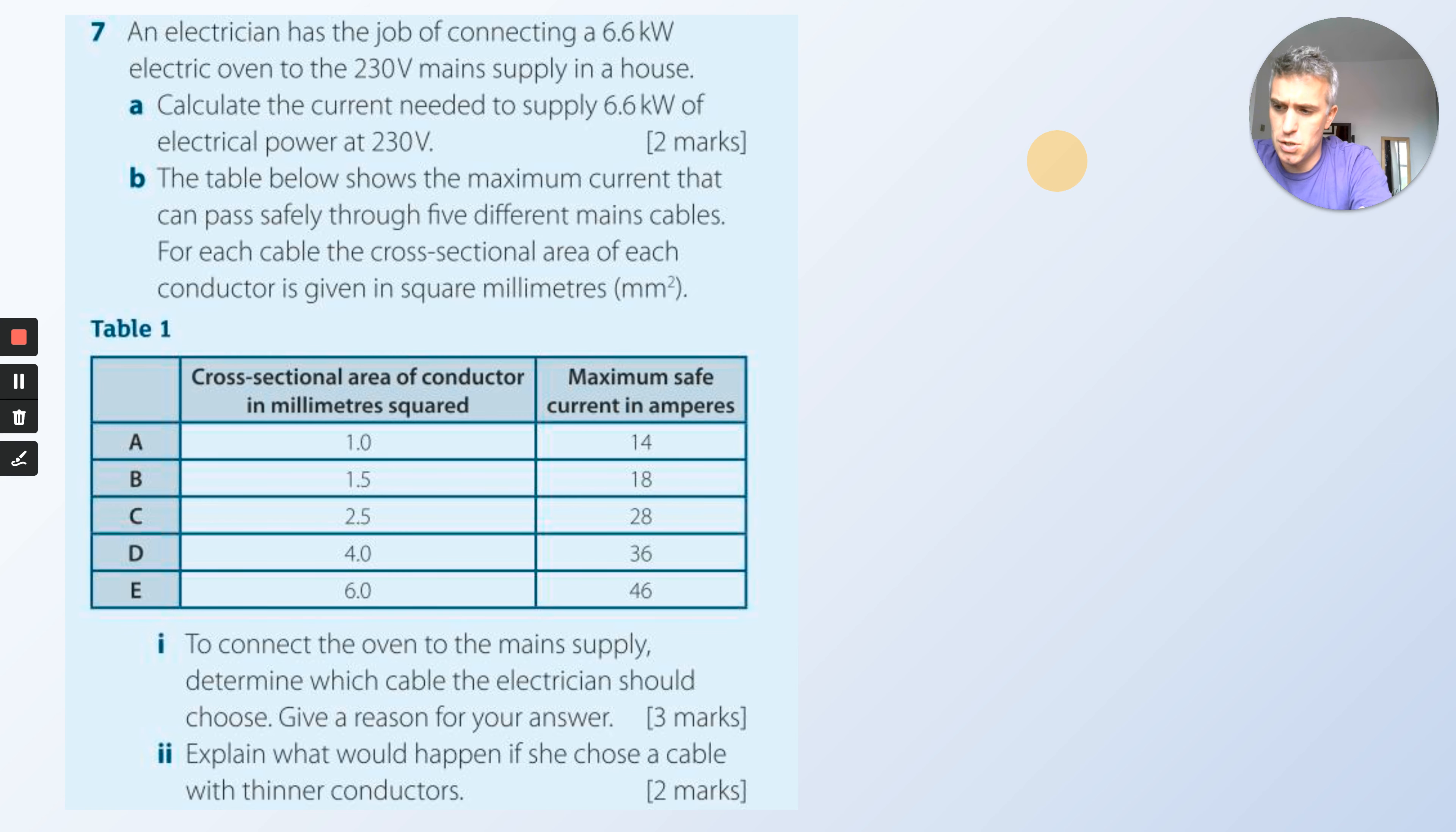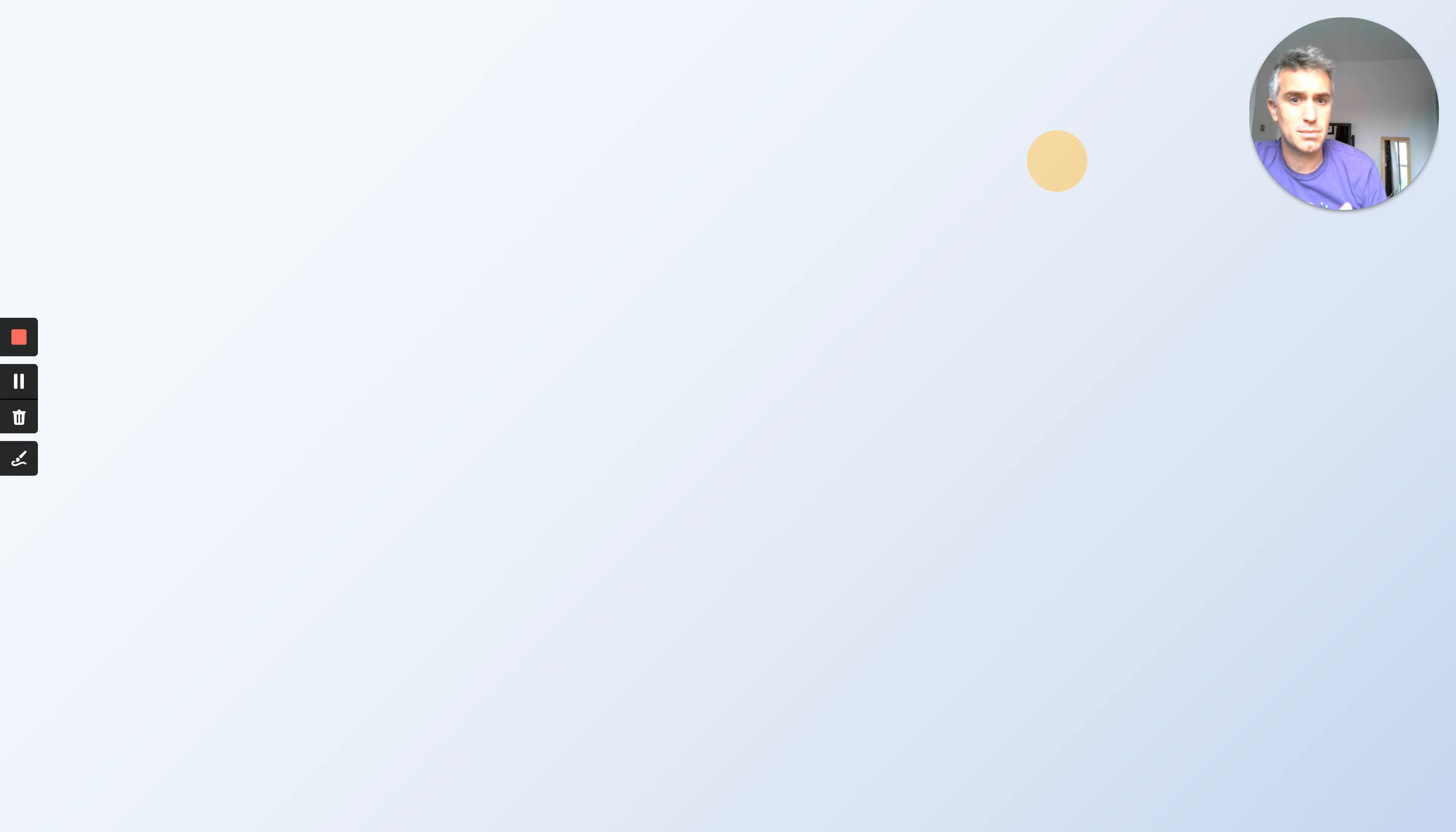Explain what would happen if she chose a cable with thinner conductors. Notice they get thinner. The thinness is at the top and the thickest is at the bottom. What do you think would happen? That's it. The next lesson, I'll go through all these questions, doing the work and solutions, so you can double check your answers.